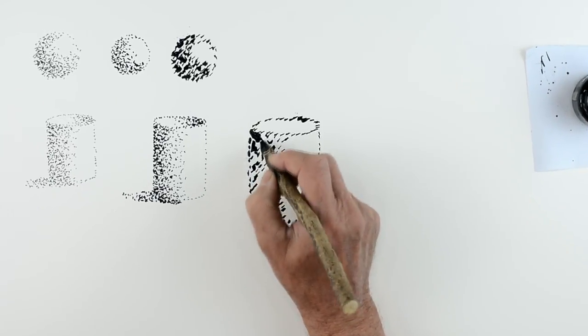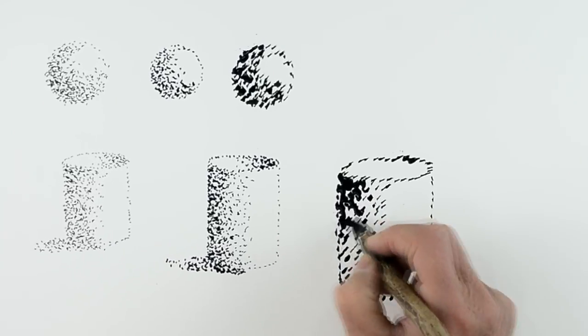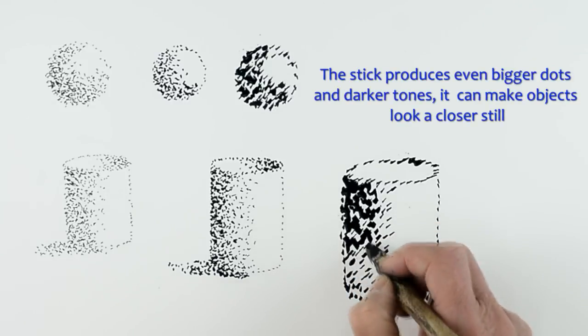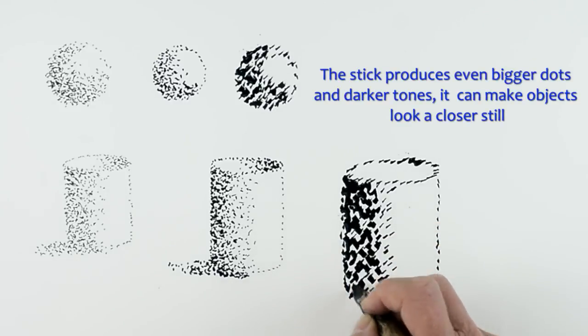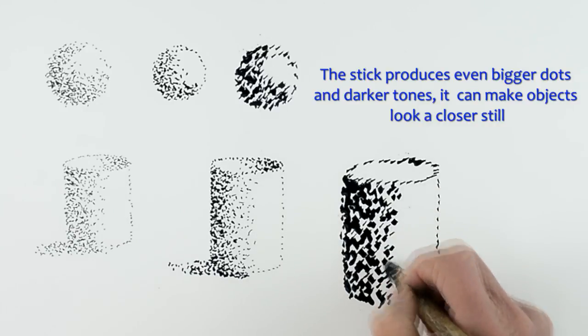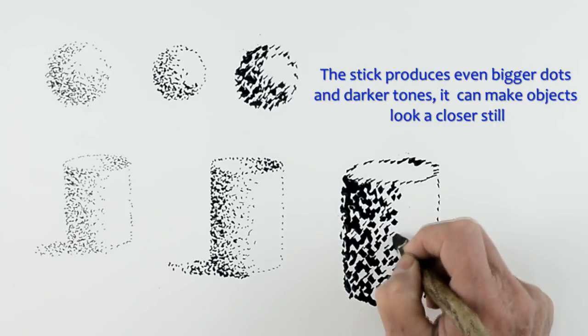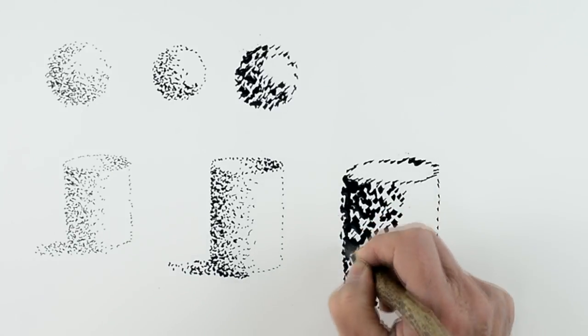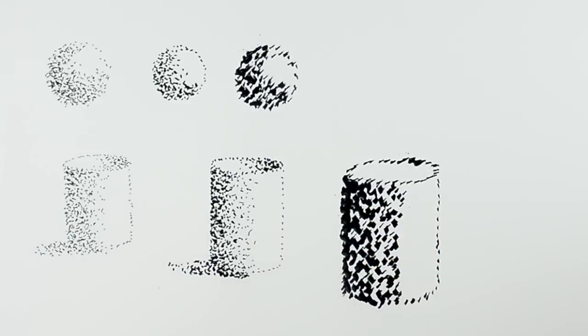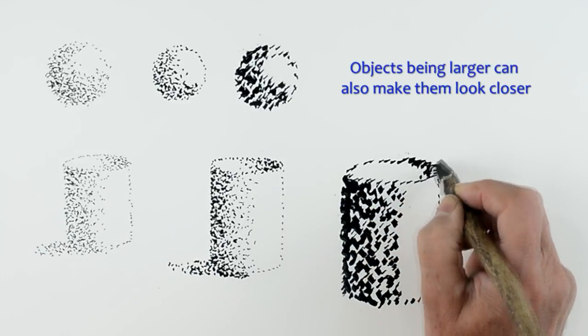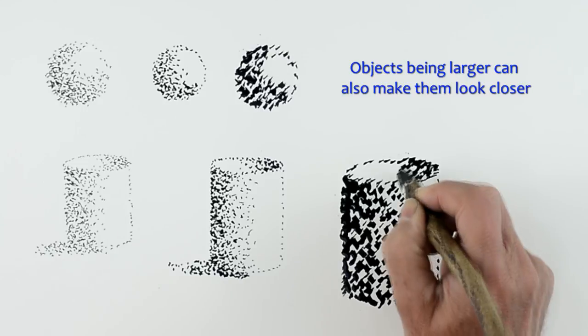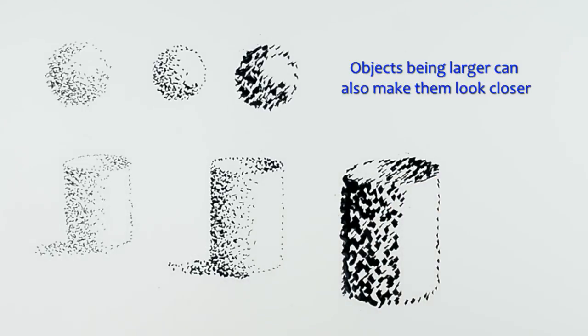But again, we'll simply build up the dots. This can get quite dark on this side now, make the dots really nice and strong, nice and bold. And you can see much cruder effect, but makes the object bigger, bolder, closer to you. You can see the difference between the three objects here, how one looks closer than the others.